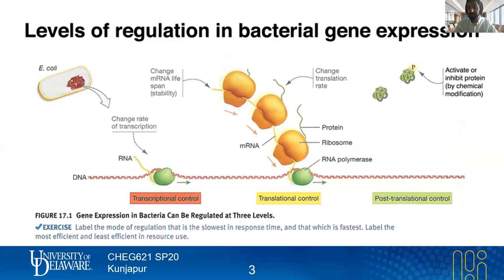Post-translational control gives you that kind of response speed. However, this exercise also involves labeling the most efficient and least efficient in resource use. You can think that if you've already made all this enzyme just to turn it off or degrade it, that's really wasteful. So in terms of resources, it's really efficient to just flip a switch and decide you're going to transcribe this gene — then you haven't gone through all these wasteful processes.